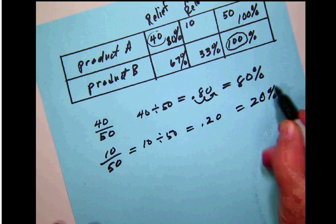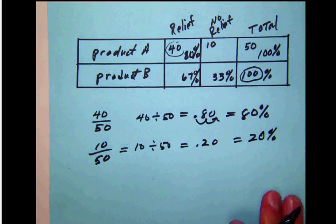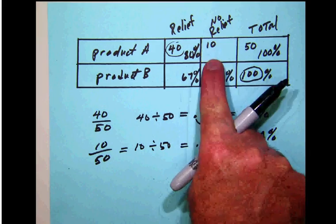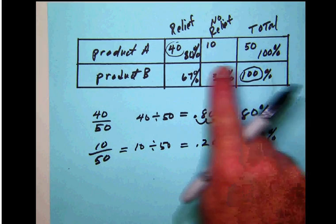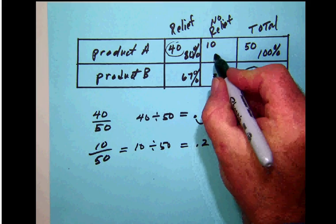Another way to do that is to realize that your two percentages must add up to 100%. So 80 plus 20 gives 100. You could calculate it that way.